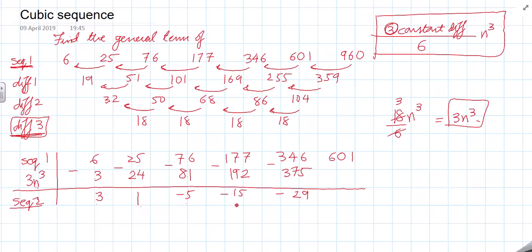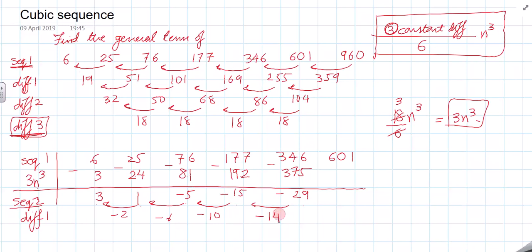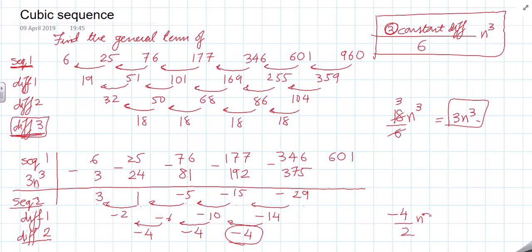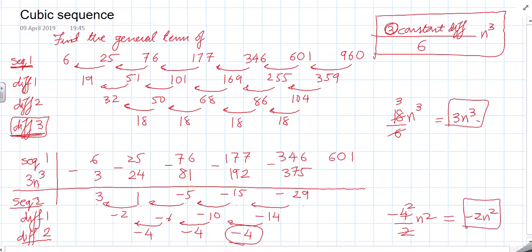I treat this as a new sequence — sequence 2 — and do the same thing. Taking the first difference: 1 minus 3 = −2, then −6, then −10, then −14. Taking the second difference: −4, −4, −4. So the second difference is constant at −4. If the second difference is constant, I divide by 2 and put n². So this contributes −2n².